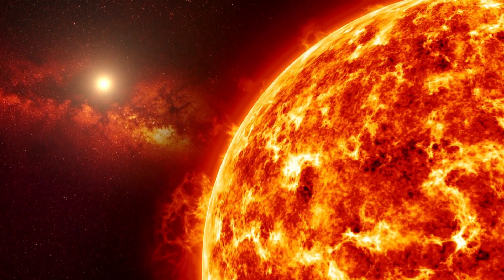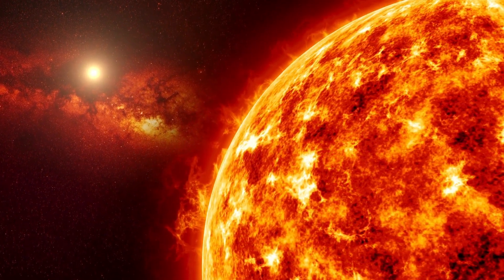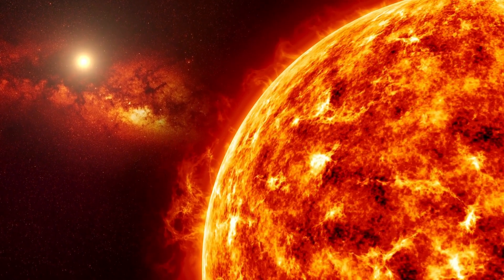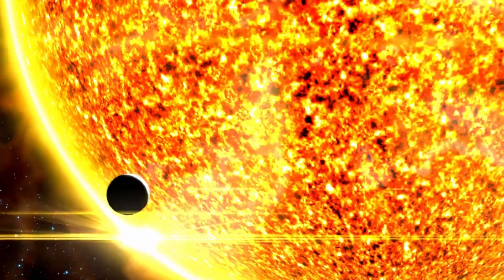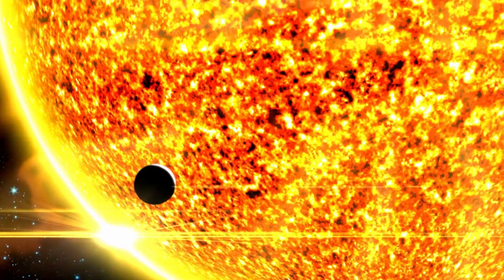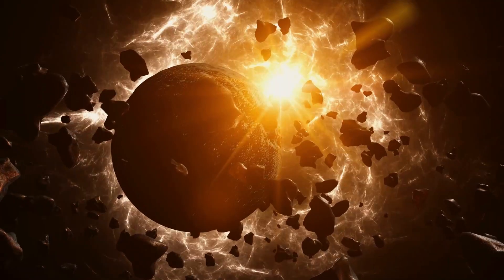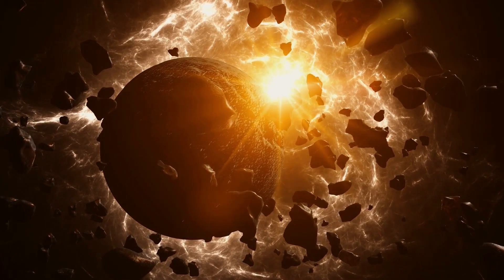The cores of these massive stars continue to fuse elements into heavier and heavier ones, leading to the formation of elements up to iron. Once a massive star has fused elements up to iron in its core, a dramatic chain reaction begins. Unlike previous fusion reactions that released energy, the fusion of iron absorbs energy. As a result, the energy production that had been counteracting gravity suddenly stops.